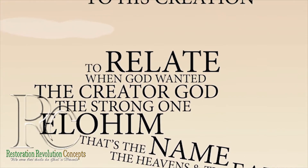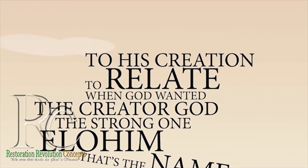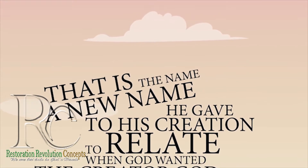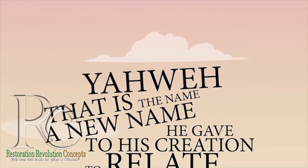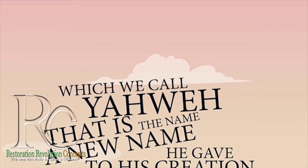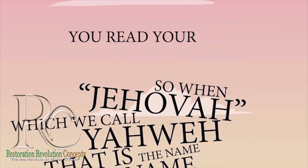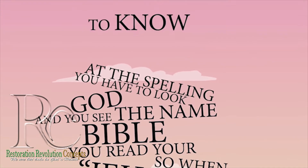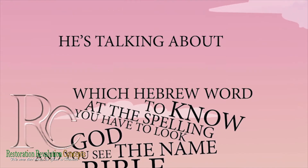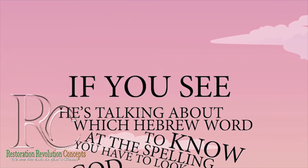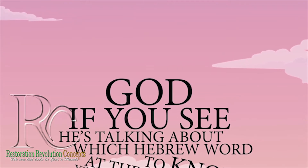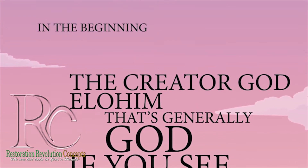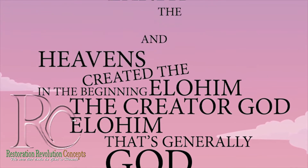When God wanted to relate to his creation, he gave a new name — that is the name Yahweh, which we call Jehovah. So when you read your Bible and you see the name God, you have to look at the spelling to know which Hebrew word is being used. If you see G-O-D, that's generally Elohim, the creator God — 'In the beginning, Elohim created the heavens and the earth.'